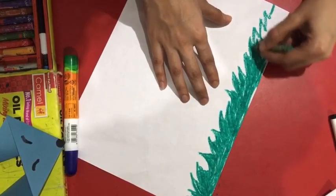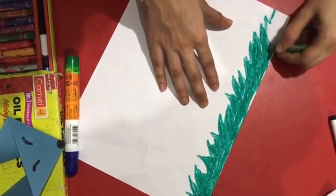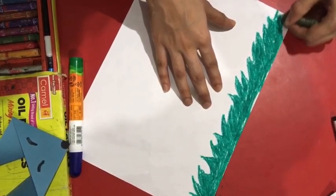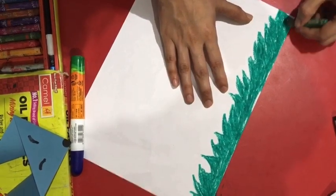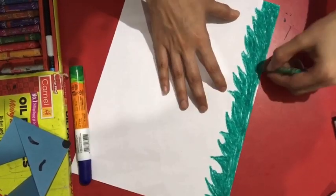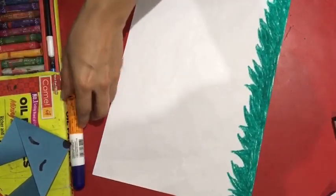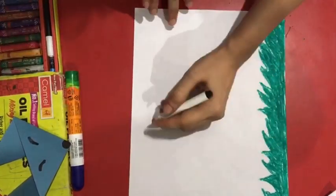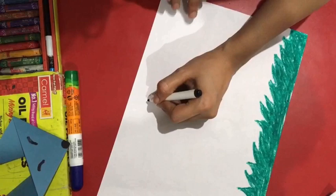You can use any green color. Now take black crayon and draw a few birds flying in the sky.